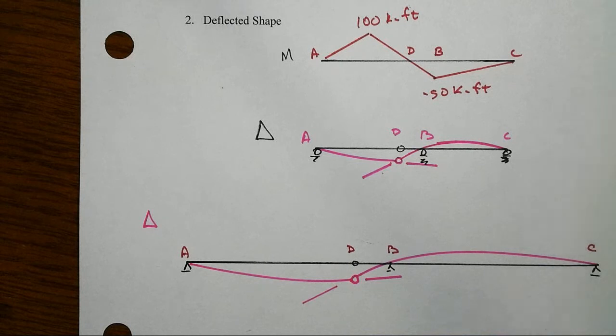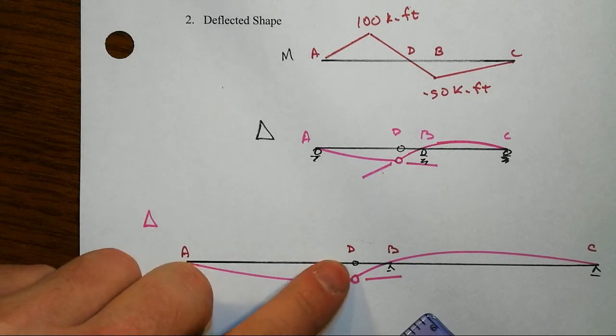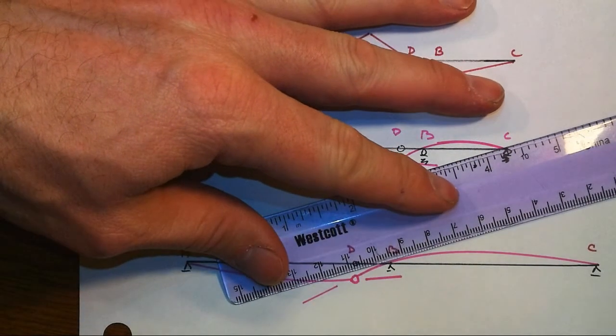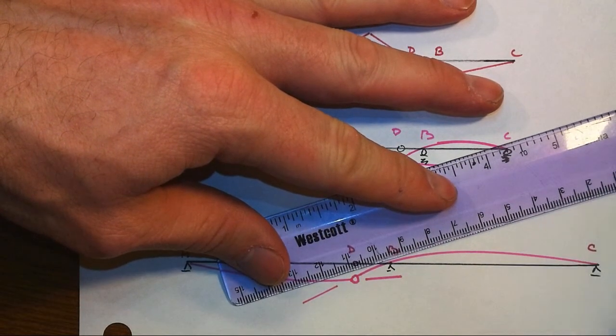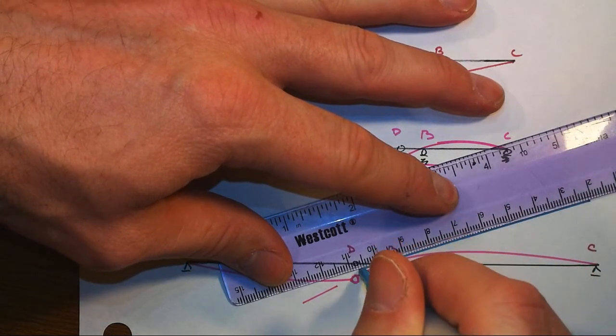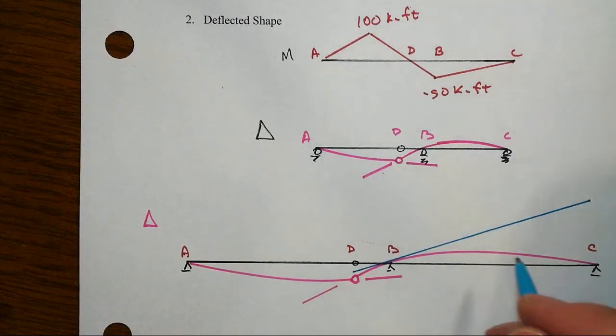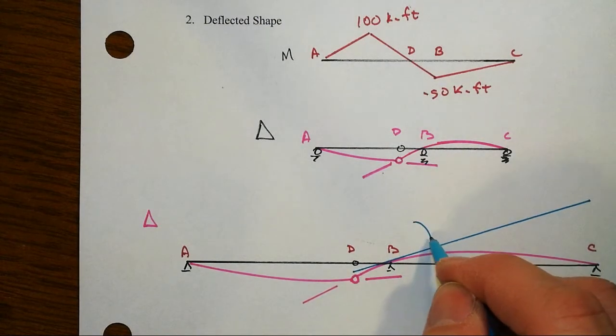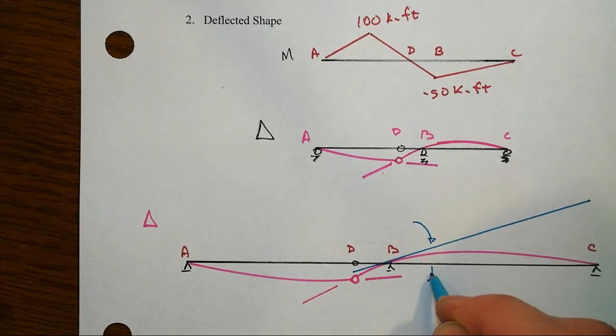Now remember, when you see a simply supported kind of segment, you almost always want to draw a tangent that goes from support to support. We're trying to figure out what happens at the hinge, so why don't we take a tangent at B and draw it all the way across from support to support and see what we end up with.